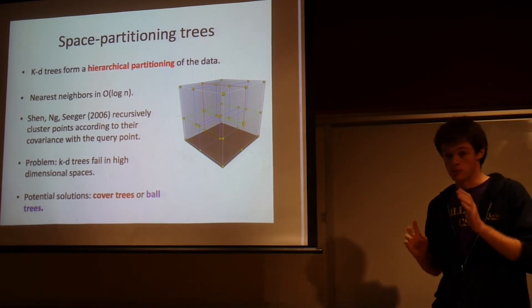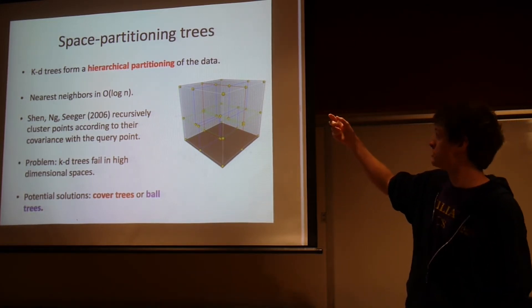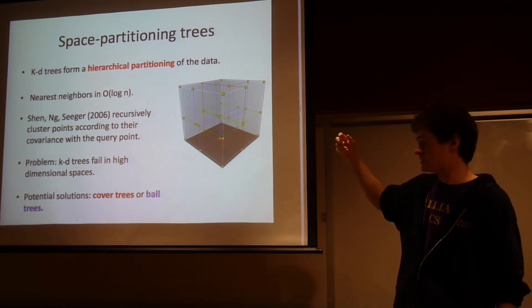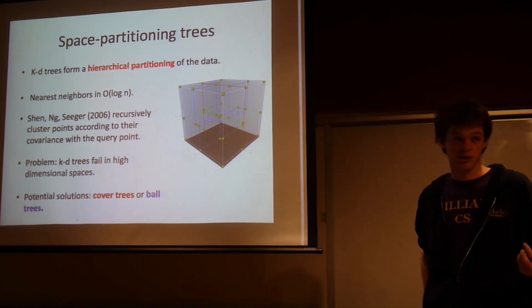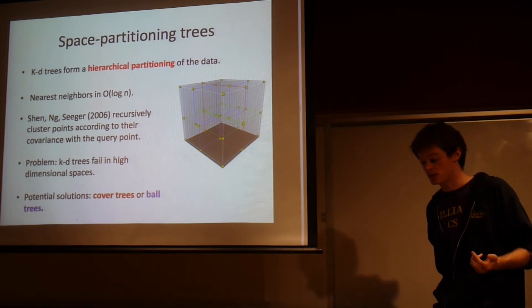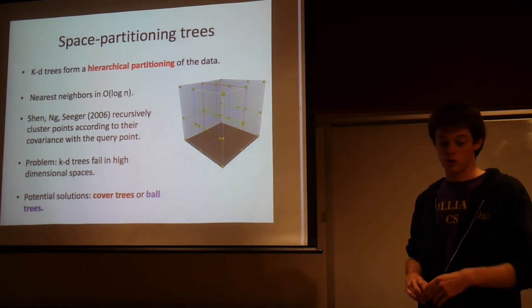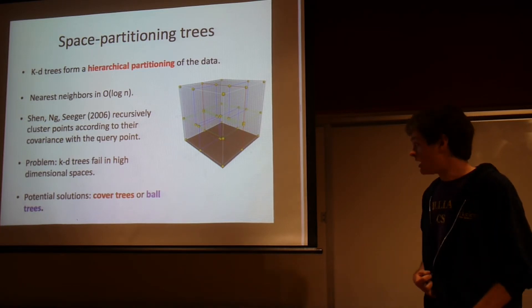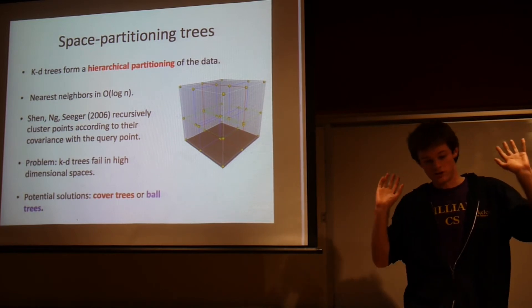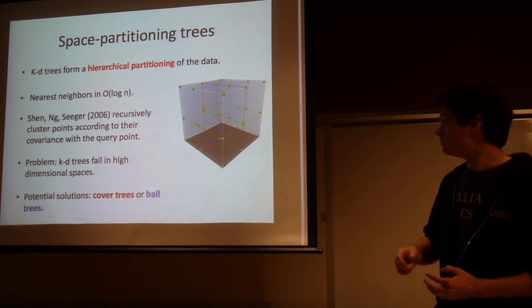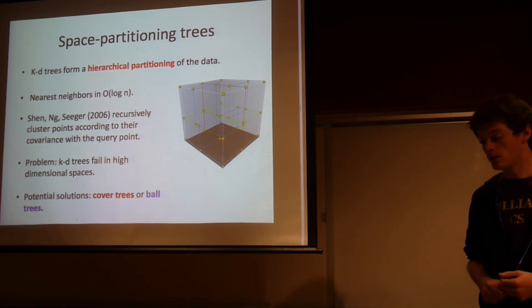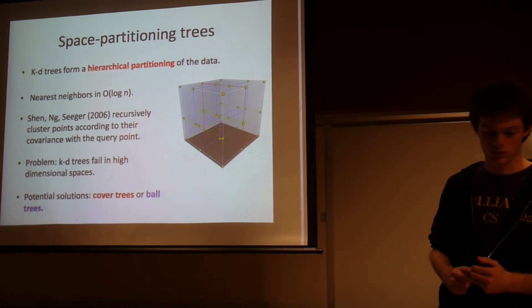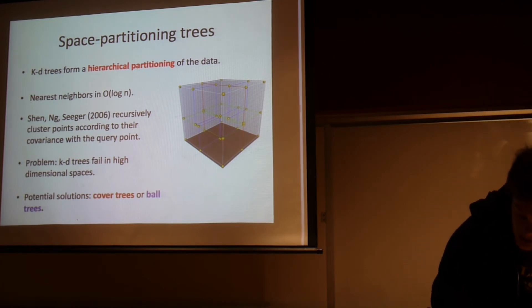In the published literature, the only type of space partitioning tree that people have applied to this problem is a KD tree. And KD trees, one of their big drawbacks is that they essentially don't work in high dimensional spaces. They essentially lose all of their computational advantages. So people actually have developed cover trees and ball trees, for example, or other data structures to fill similar roles which don't have these same problems. So one of our potential ideas is to apply some of these newer space partitioning tree structures to similar techniques to see if that can speed up regression on some high dimensional data sets.